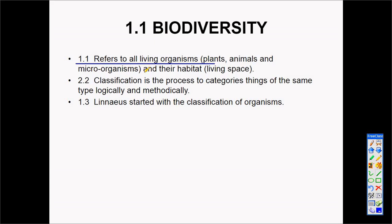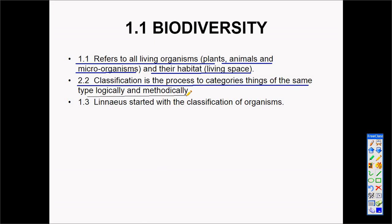We also organize plants and animals according to a classification system, putting them into different categories so that we can understand their existence better. Linnaeus was the first person who started with the classification system, placing animals and plants into different categories.